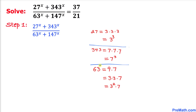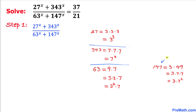Now let's look at 63. This can be written as 9 times 7, which equals 3 times 3 times 7, so 3 squared times 7. And finally, 147 — using prime factorization — can be written as 3 times 7 squared.